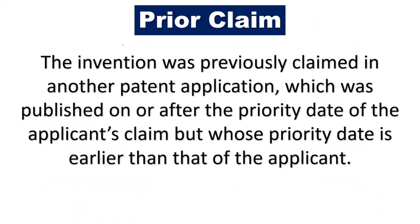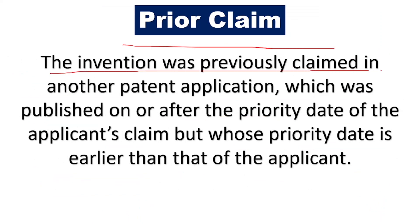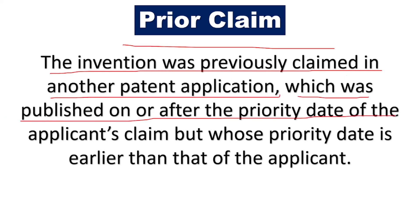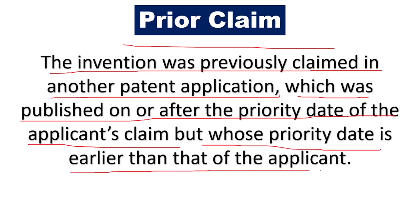The next ground is prior claim — the invention was previously claimed in another patent application which was published on or after the priority date of the applicant's claim, but whose priority date is earlier than that of the applicant. So if someone else had already applied for the patent before you did, they can put forward a pre-grant opposition.